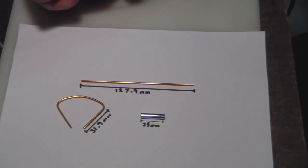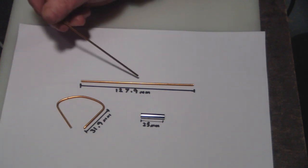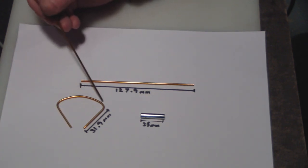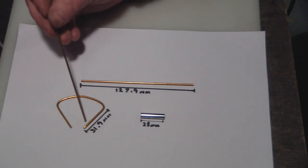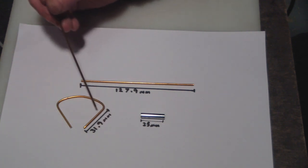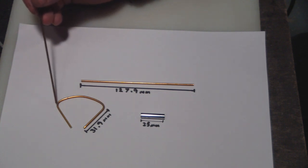So just quickly to go over the measurements one more time. You need three pieces of rod, 127.9mm in length. And then you bend the rod in the middle to produce this curve. And you bring the sides in 31.9mm. Put a bend in there and there.